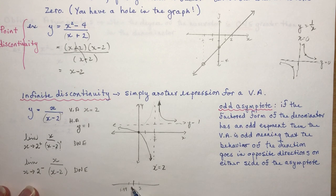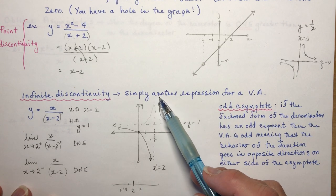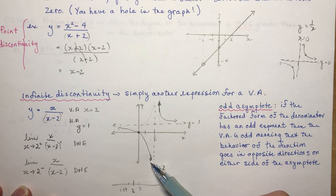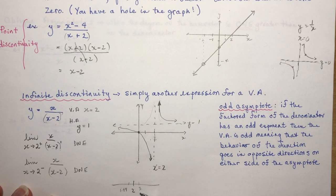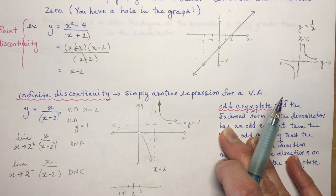That's how you check an infinite discontinuity at a certain point. You don't have to put in 2.0001 or 1.999 — you just want to know whether the function is positive or going down. You can check with a calculator if your teacher asks.